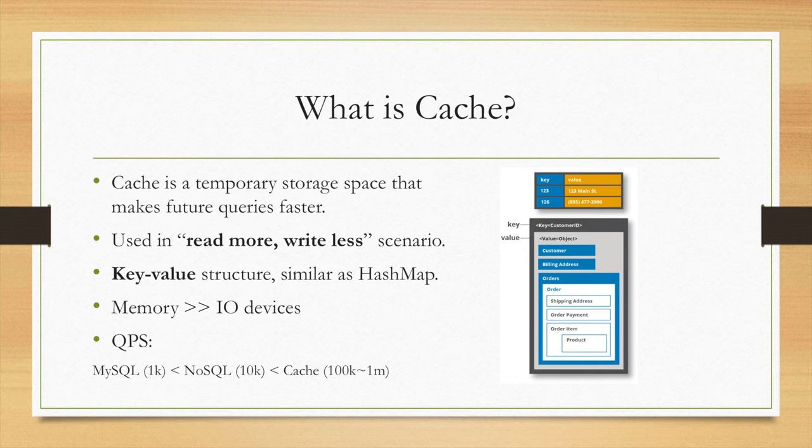We can see that QPS, query per second, for MySQL, usually it can handle 1k QPS. For NoSQL, like DynamoDB, Cassandra or other NoSQL databases, it can handle 10k. And if we use cache, it's totally in the memory. The QPS can up to 1 million.